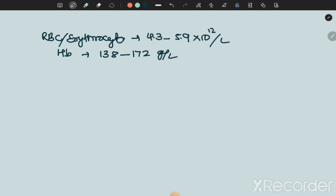Normal ranges to remember: Erythrocytes are 4.3 to 5.9 × 10¹² per liter. Hemoglobin is 138 to 172 g/L. Color index is 0.9 to 1.1. Reticulocytes are 0.5 to 1.5 percent.